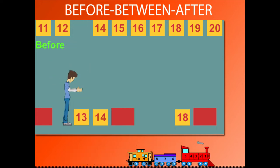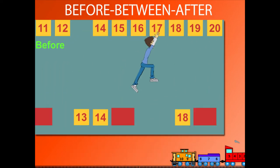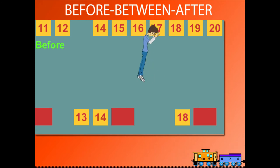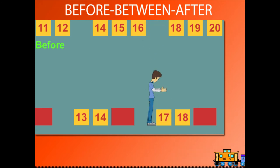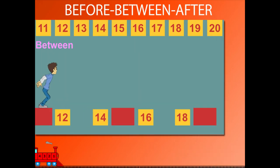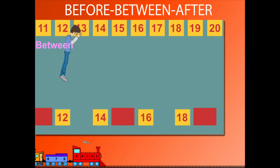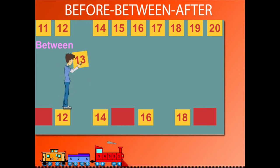What comes before 18? Sammy pulls down 17. What comes between 12 and 14? Sammy pulls down 13.